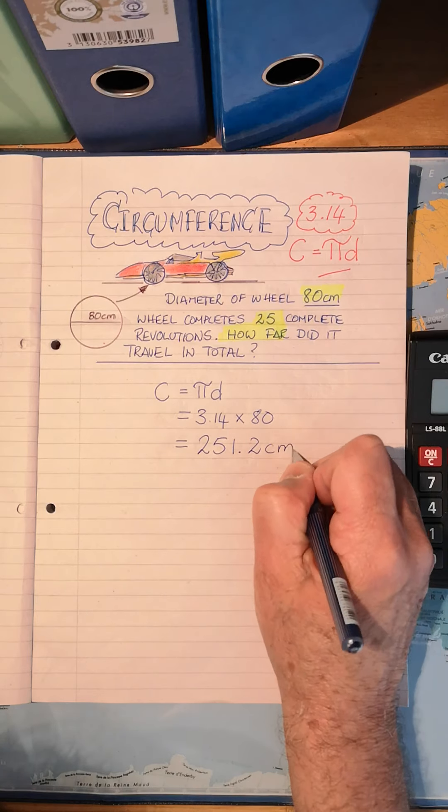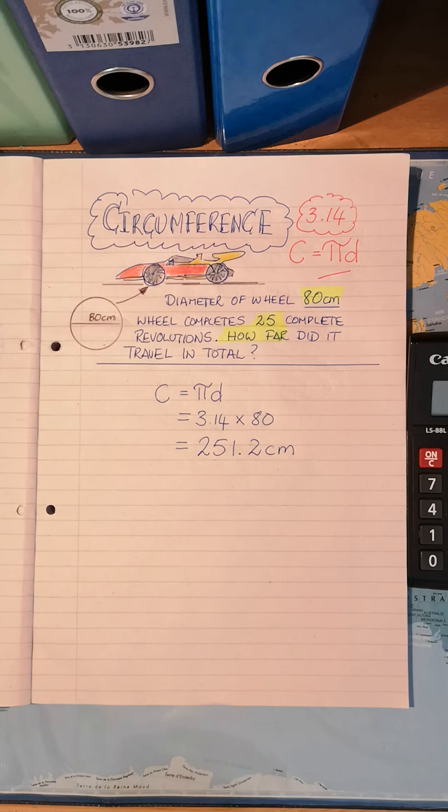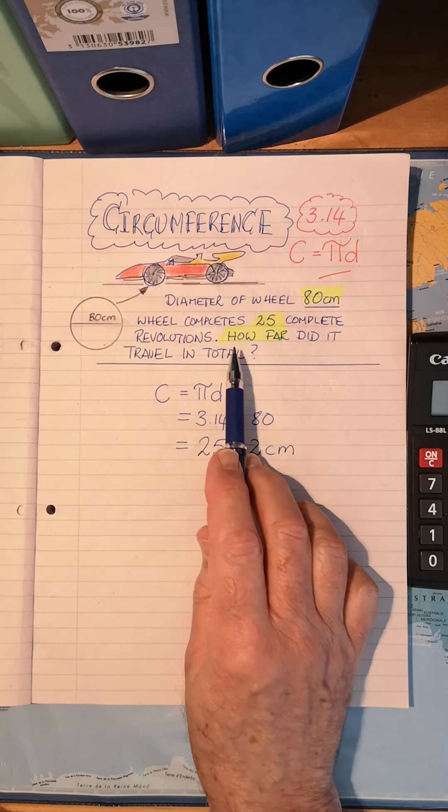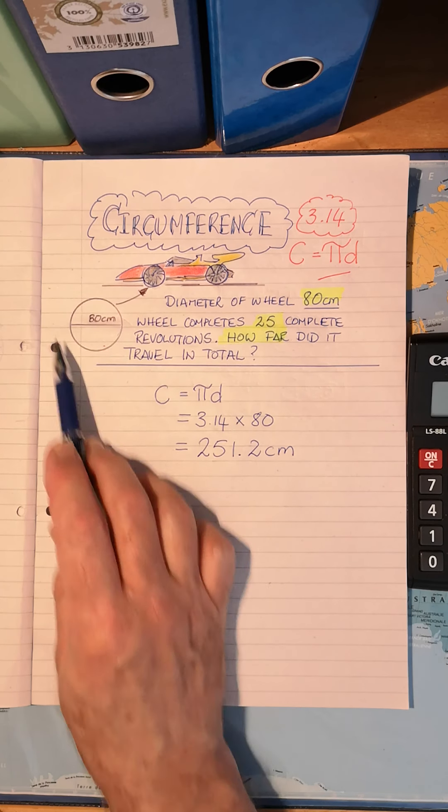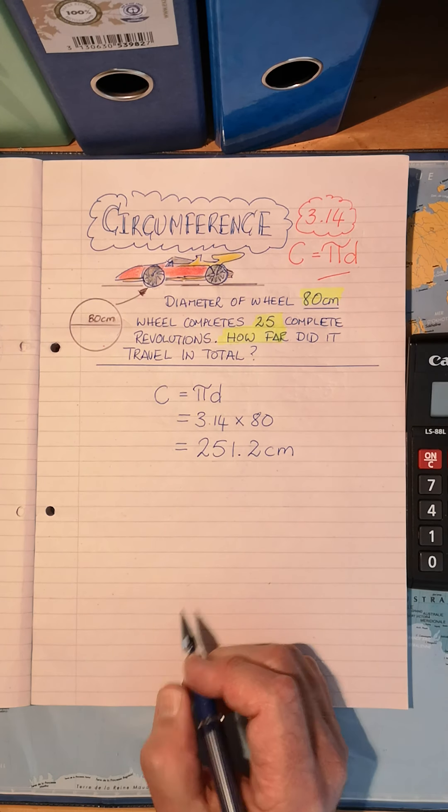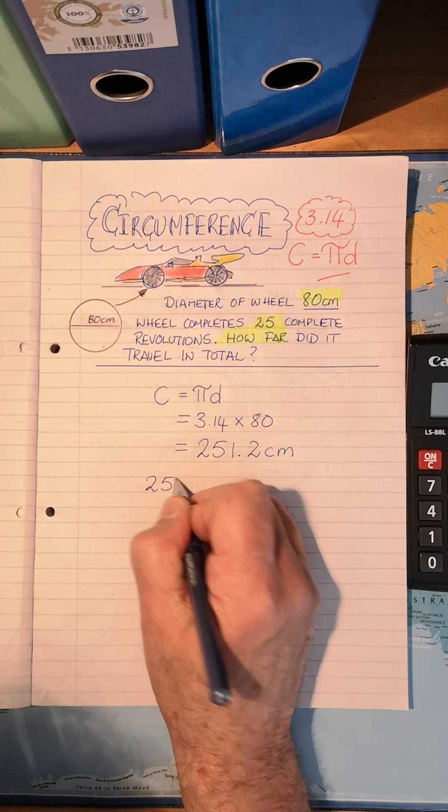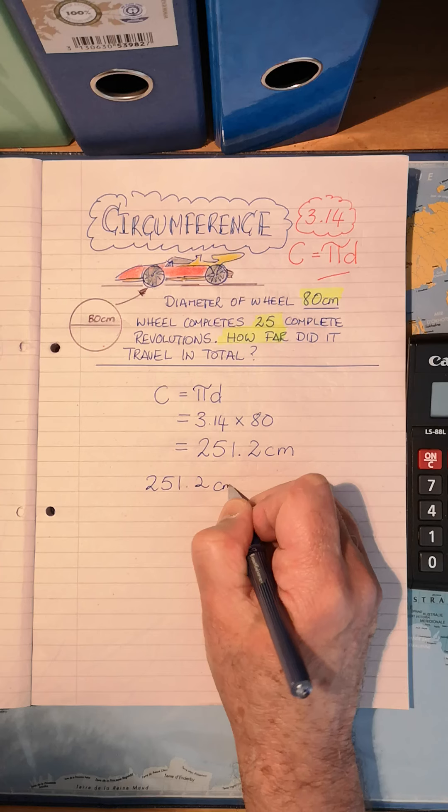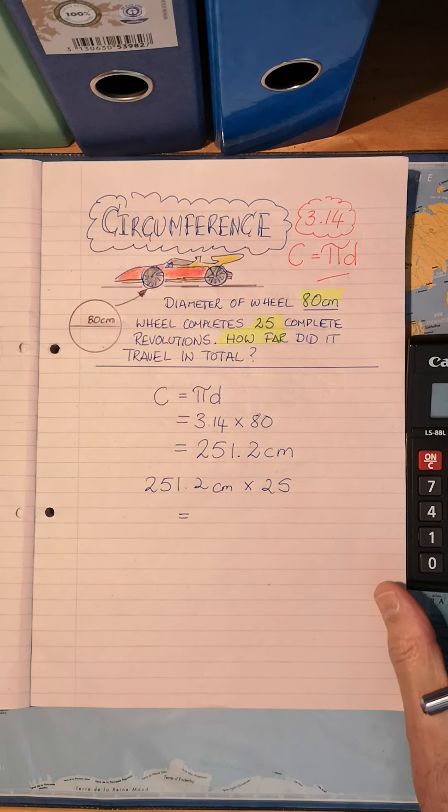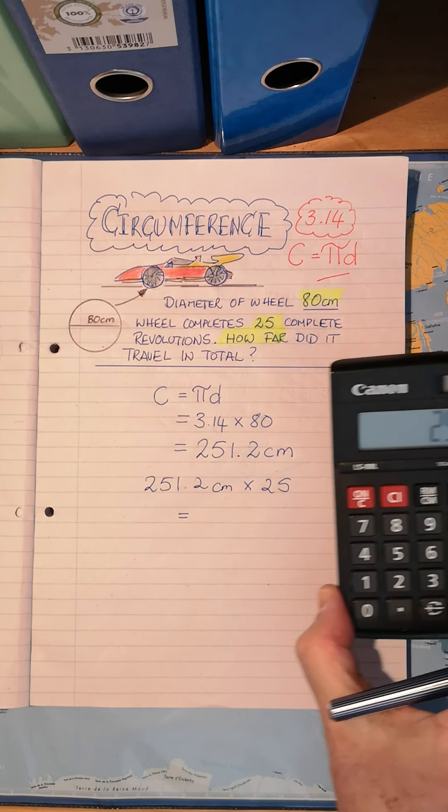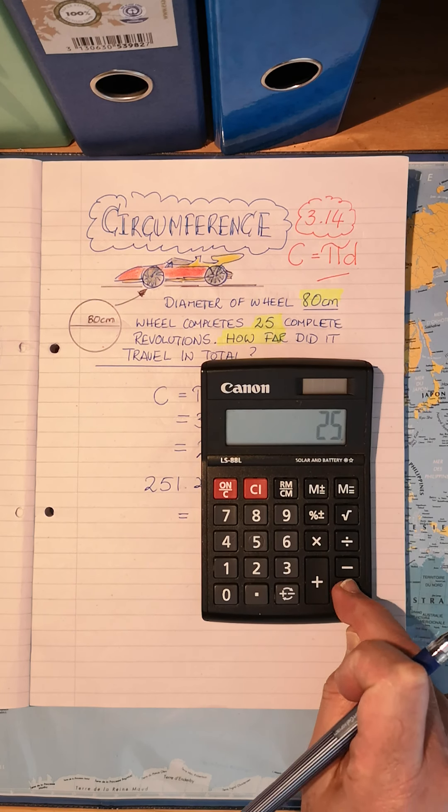That's not my complete answer though, because they want to know how far it traveled after 25 complete revolutions. That amount must still be multiplied by 25 before we reach our final answer. I've still got it on my calculator, 251.2 times that by 25, and that gives me 6,280 centimeters in total.